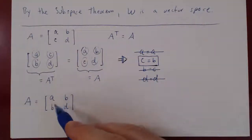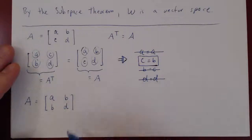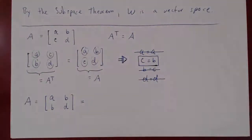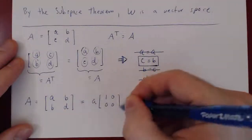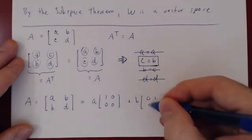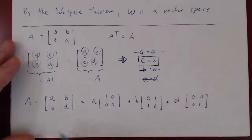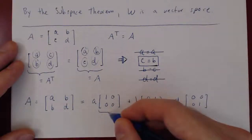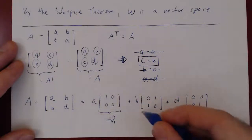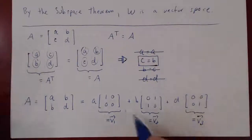To extract a basis, we split the parameters. Any symmetric 2 by 2 matrix equals: a times [[1,0],[0,0]] plus b times [[0,1],[1,0]] plus d times [[0,0],[0,1]]. So any symmetric matrix is a linear combination of these three matrices. Call them V1 = [[1,0],[0,0]], V2 = [[0,1],[1,0]], and V3 = [[0,0],[0,1]]. These are generators for the space of symmetric 2 by 2 matrices.